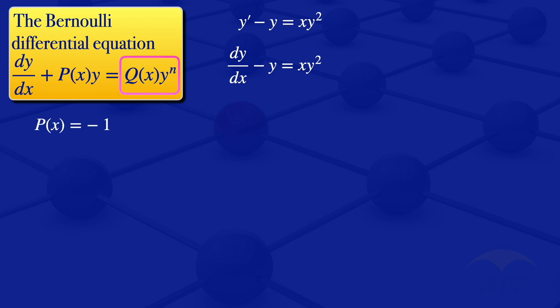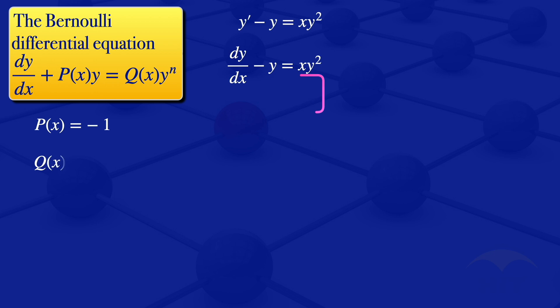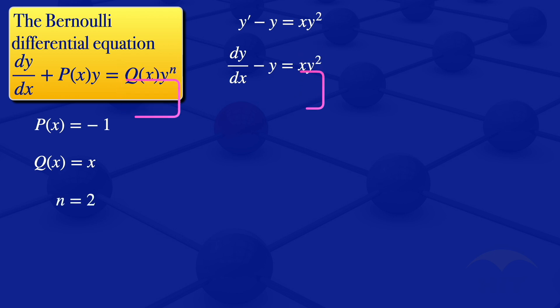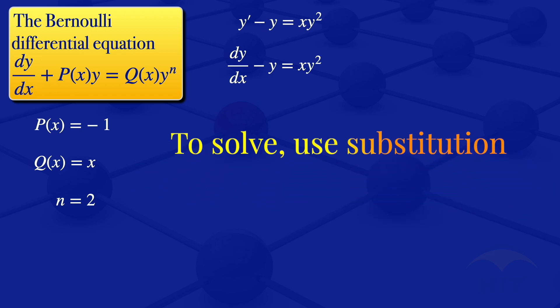Looking at the right hand side, we have Q of X. On the right hand side we have X multiplied by Y squared, so by comparison, Q of X is equals to X. By looking at the right hand side, we see that our N is equals to 2.